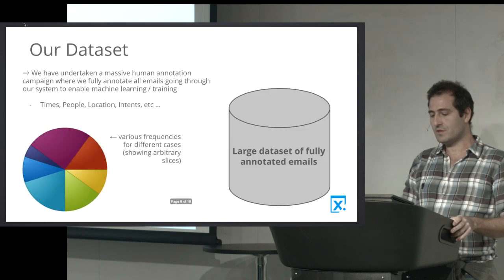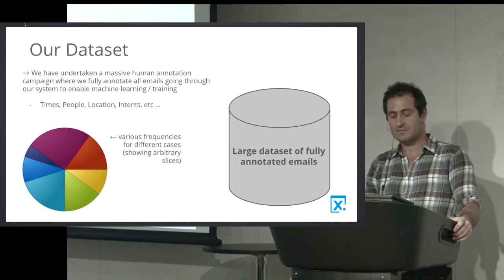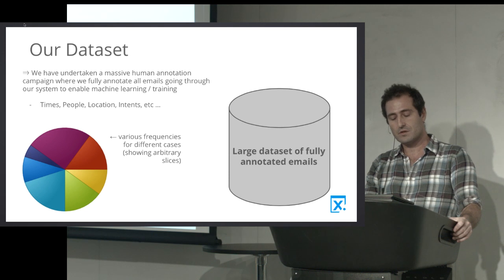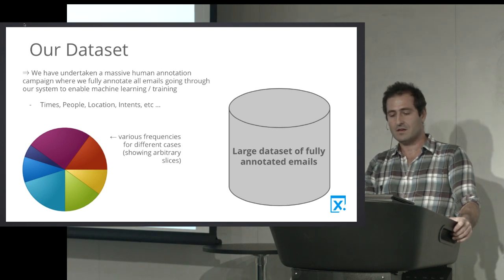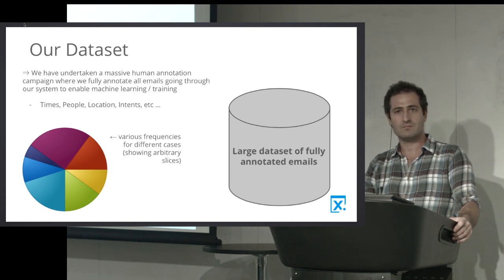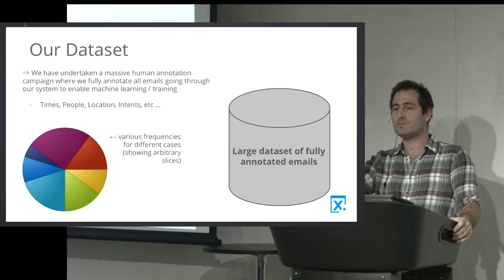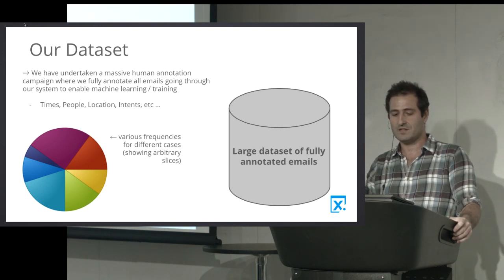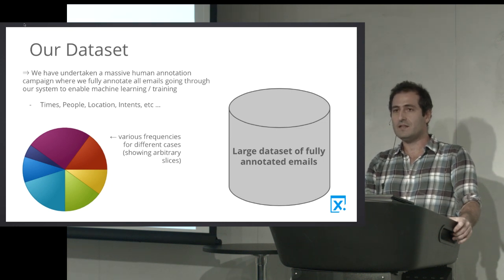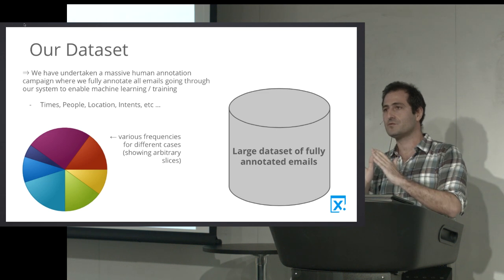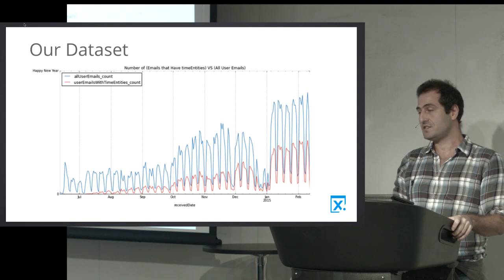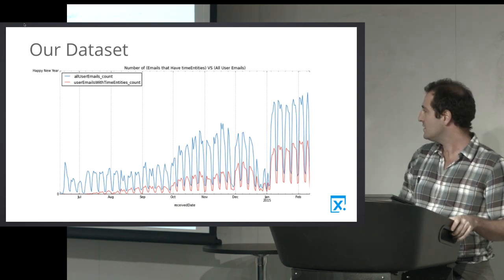Before going into how we tackle each of these problems, let me say a few words about our dataset. Early on, we undertook a campaign to annotate by hand a significant fraction of our data — an ongoing campaign. We have a significant dataset of emails where we've fully annotated times, people, locations, and the intent of the email. Not just flagging 'this word is a temporal expression,' but actually resolving the people and times to what they are. That's our corpus. We have many different cases to handle, some more frequent than others, so there are still cases for which we're lacking statistics, but that's changing.